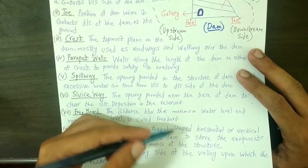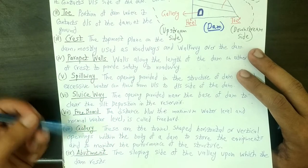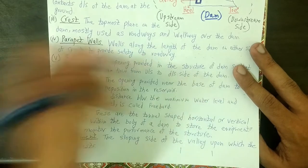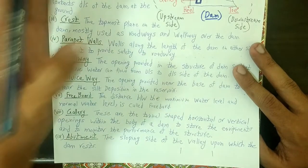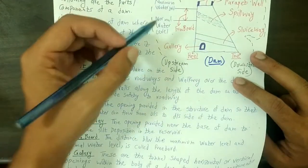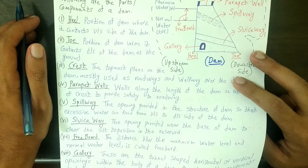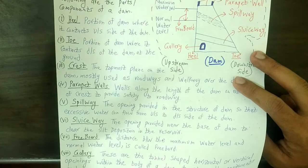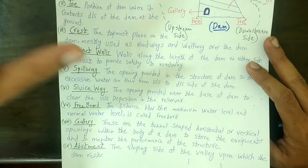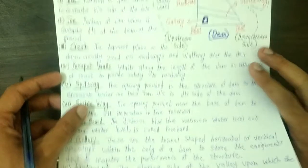The last component is the abutment — the sloping side of the valley upon which the dam rests. These are basically the sloping sides at the end of the valley upon which the whole dam rests. This cannot be shown well in a 2D diagram; it is better shown in a 3D diagram. The end portion of the valley upon which the entire dam rests is known as the abutment.